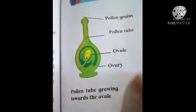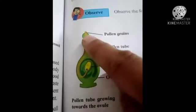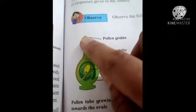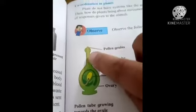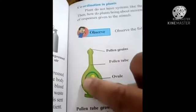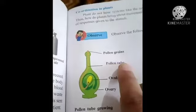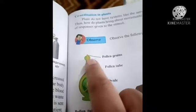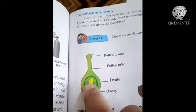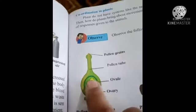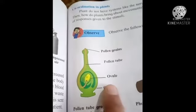Look at this diagram of a flower — the internal part of a flower. During pollination, pollen grains settle on the stigma. As soon as they settle on the stigma, in favorable conditions they form a tube-like structure inside. This yellow portion is nothing but the pollen tube. The movement of this pollen tube is towards the ovule, towards the ovary. So if it is towards the ovary, we can say this movement is chemotropic.